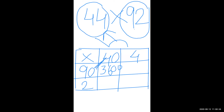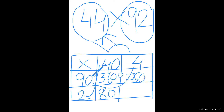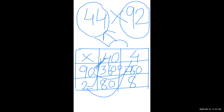Now go to the next column: 90 into 4. Your answer is 360. Next, 2 is remaining. Multiply 2 into 40, your answer is 80. And 2 into 4, your answer is 8.